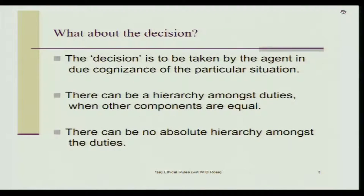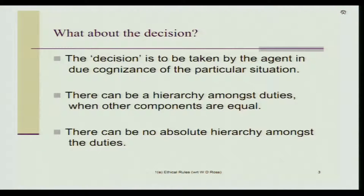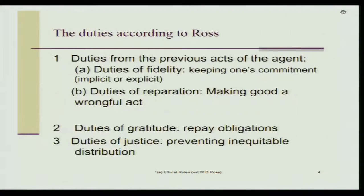Ross also mentions that there is a hierarchy amongst the duties when other components are equal, but in the same breath mentions that there can be no absolute hierarchy amongst duties. So Ross is actually allowing a fixed set of duties, but yet giving freedom to the agent to decide on the hierarchy amongst duties. We will talk about it in a few slides from now.